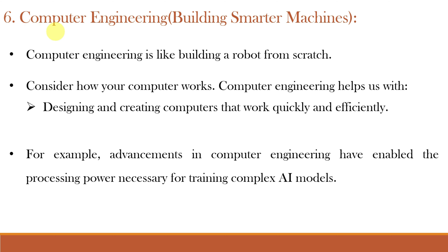Next, and most important, is Computer Science or Computer Engineering, which is related to building smarter machines. Computer engineering focuses on designing and building computer hardware and software systems. In AI, computer engineering contributes to the development of efficient computing architectures and algorithms. Advancements in computer engineering have enabled the processing power necessary for training complex AI models — without proper processing power, we simply cannot do deep learning and machine learning, which are needed for Artificial Intelligence.